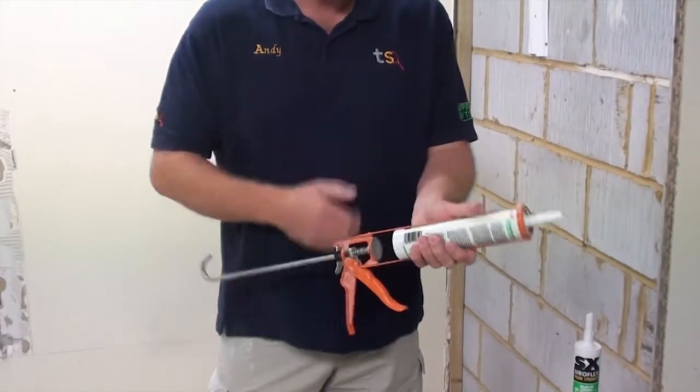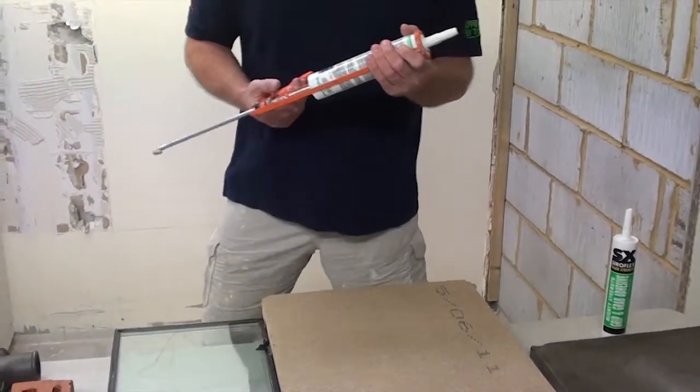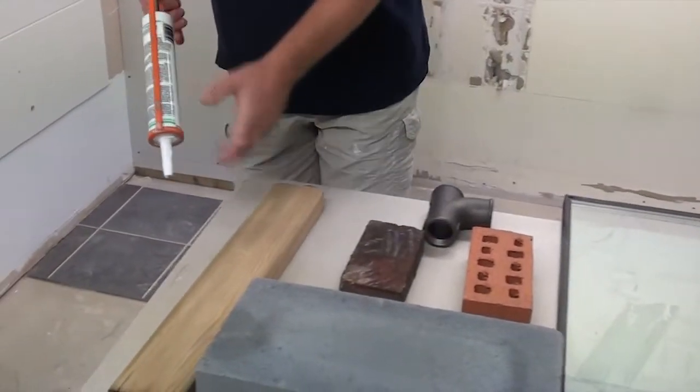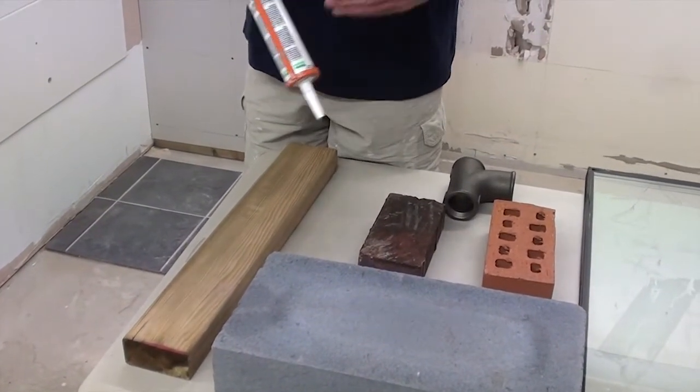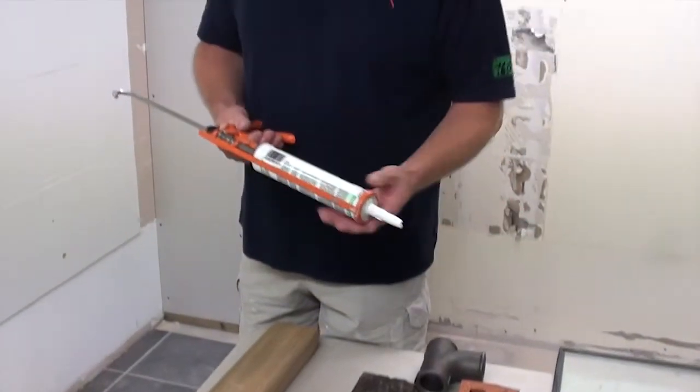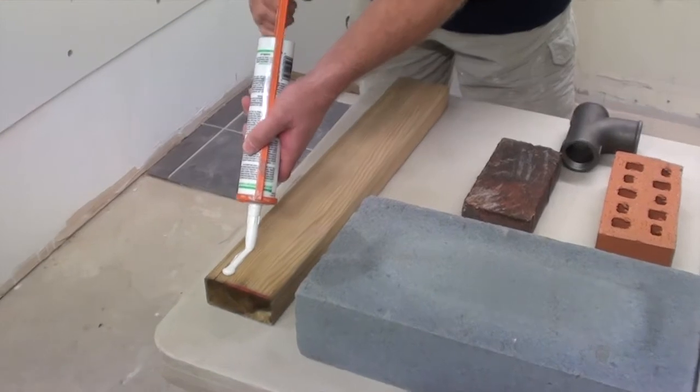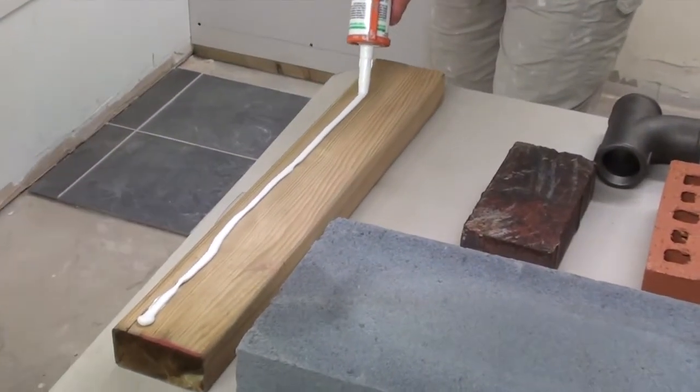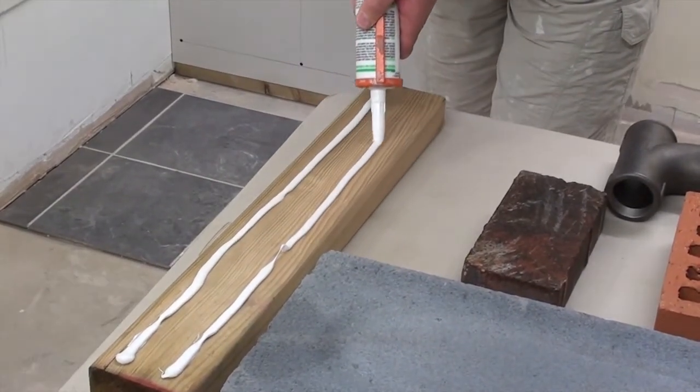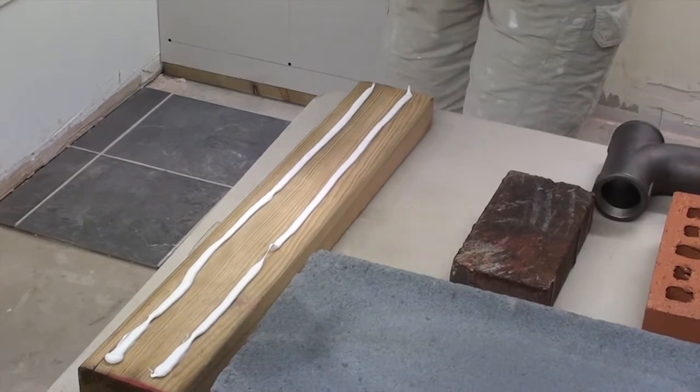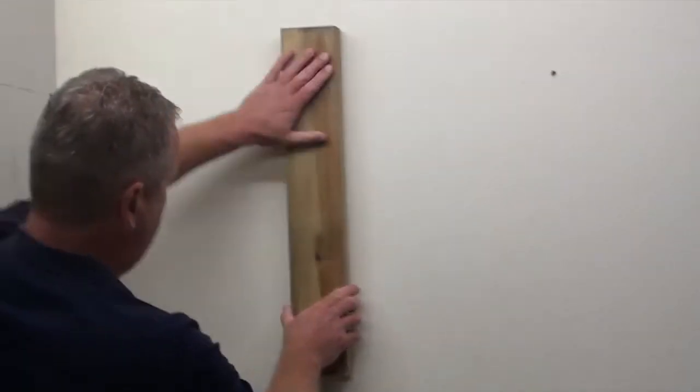We place this into our silicone gun and start from right to left, sticking our light bit of timber on the wall first. As we work through, we start sticking the products and you'll see they start to get heavier. We run two lines on this piece of timber like so, and then we place it on the wall.